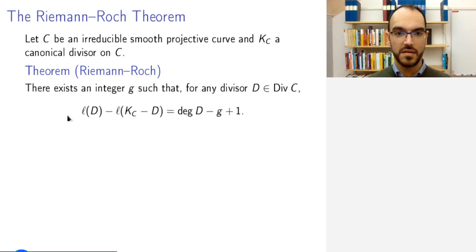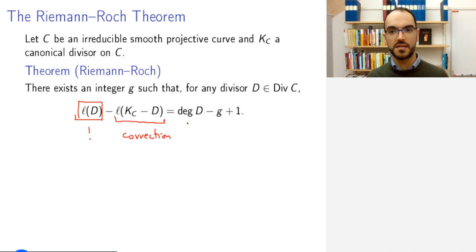So, let us stop to think what this gives us. ℓ(D), this was the thing that we wanted to know. This is the dimension of the space of all rational functions whose poles are controlled by D. So, this is what we are interested in knowing. This term should be seen as some sort of correction term. Really, we want to say that ℓ(D) is equal to this stuff, but we cannot. This is what we need to add. The degree of D is the sum of the coefficients of the divisor D. So, that is some information that is readily available. And g is this integer that exists that we will be able to calculate in a moment.